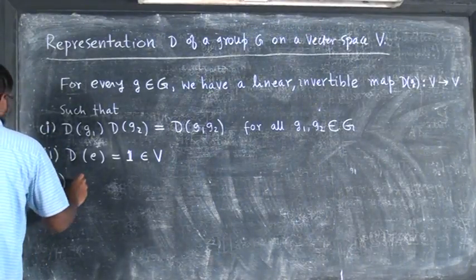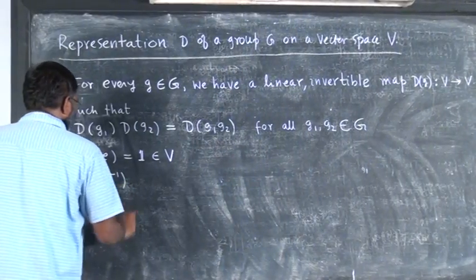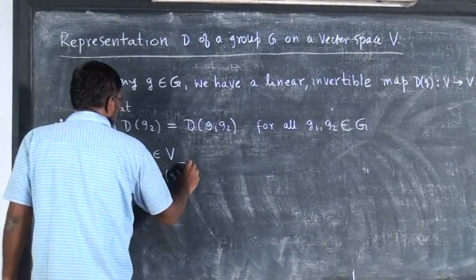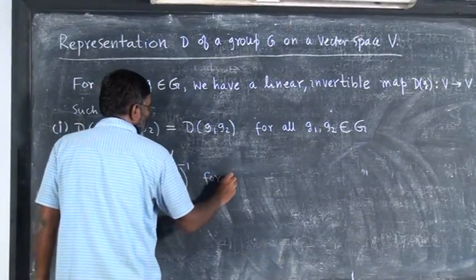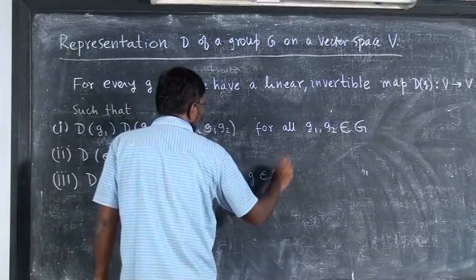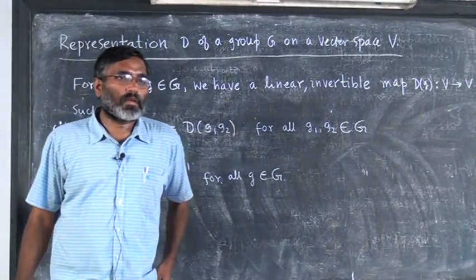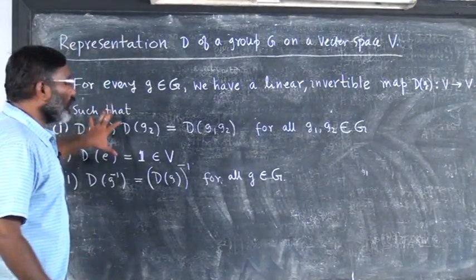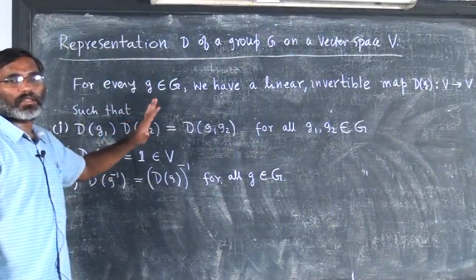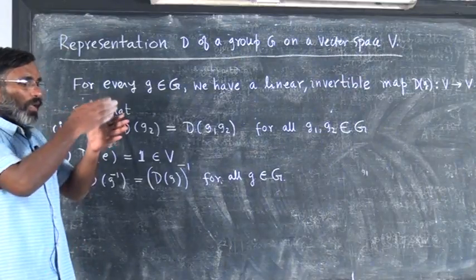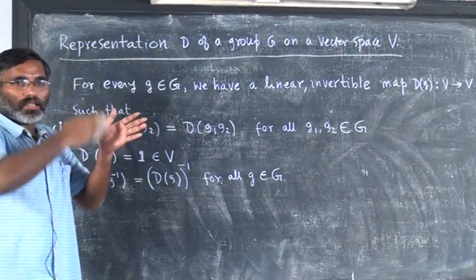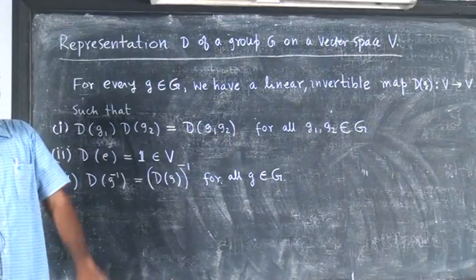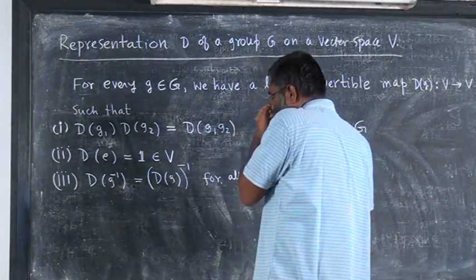Third, D(G⁻¹) = D(G)⁻¹ for all G in G. Any linear transformation from V to V preserving the group multiplication table — all these properties ensure the multiplication table is preserved. That means I have a group multiplication with G1, G2, G3, etc., and when I write the multiplication table with D(G1), D(G2), etc., I should have the same multiplication table. This is called the representation.